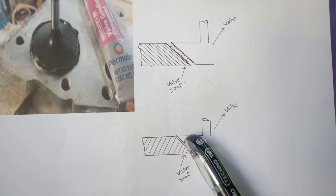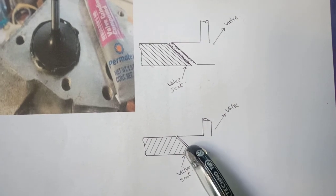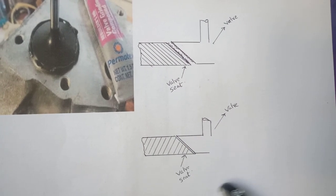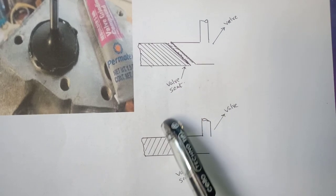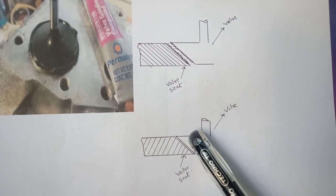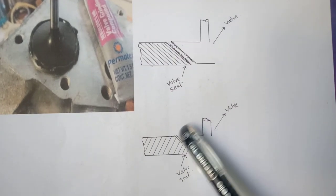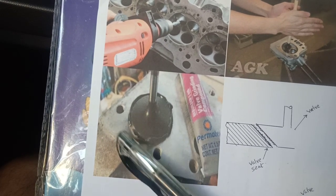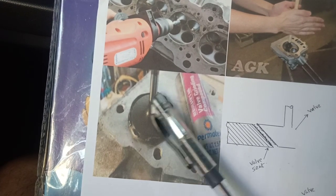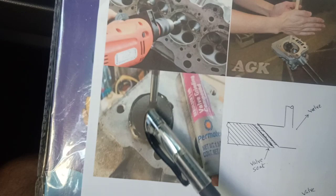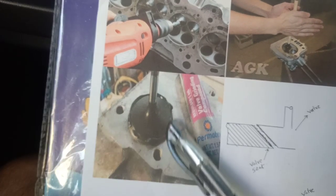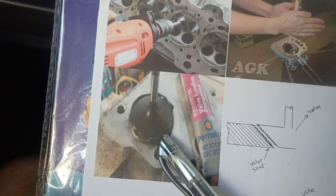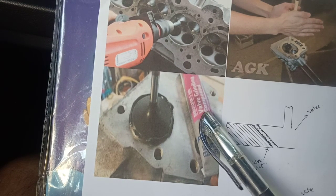For this reason, the lapping of both the valve seat and valve is necessary so that the surface becomes perfectly smooth. When there is proper contact between the valve seat and valve, there is no possibility of compression escaping, and all the compression is maintained inside the engine cylinder so the engine can run efficiently. Lapping is essentially a micro-grinding process, also called a super-finishing process.